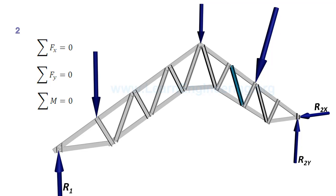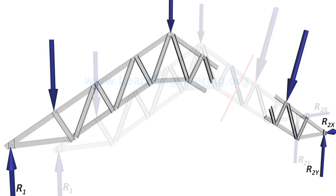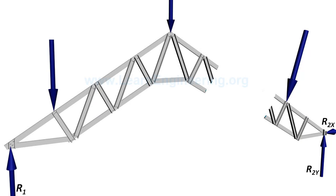Now for the most important step: cutting the entire truss into two parts by a section line. We'll learn how to draw a section line in coming sections.